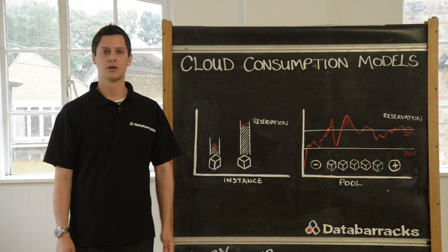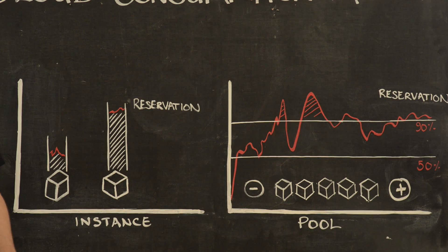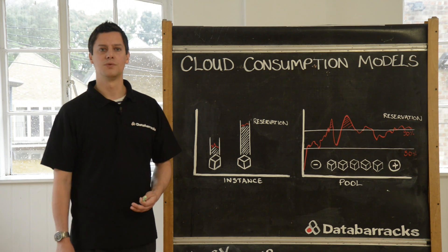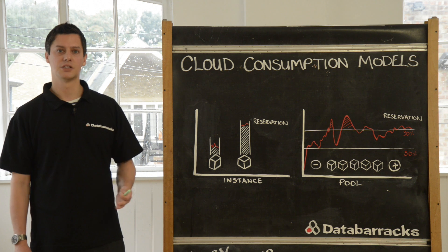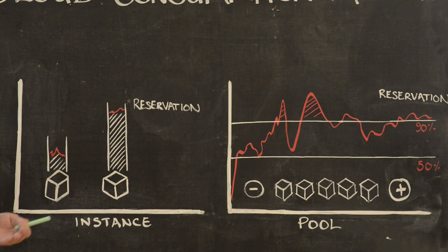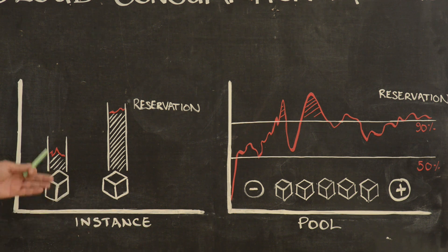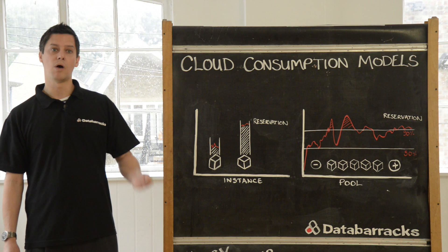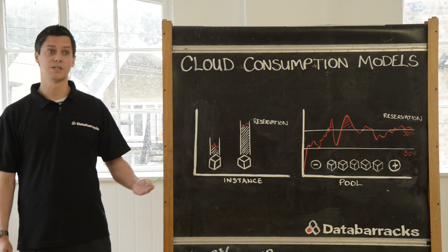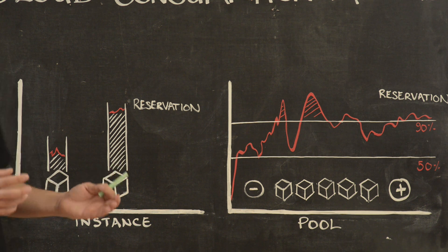Hello and welcome to Data Barracks Classroom. My name is Mark and today I'll be explaining cloud consumption models. Everybody realizes the cost benefits of moving to a cloud model, moving away from capital expenditure to operational expenditure, and cloud models allow for much tighter cost spending over actual utilization. But not many people realize there are more than one way of consuming infrastructure as a service and how you pay for it. We're going to have a look at a couple of the common models.